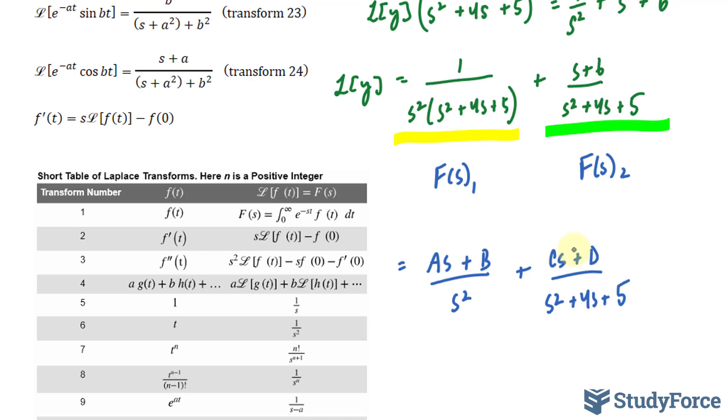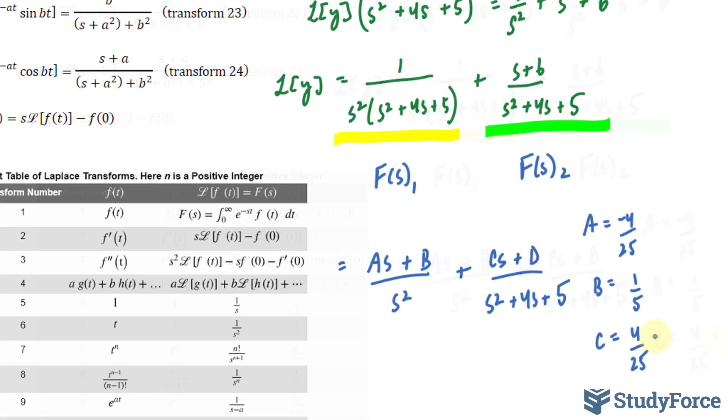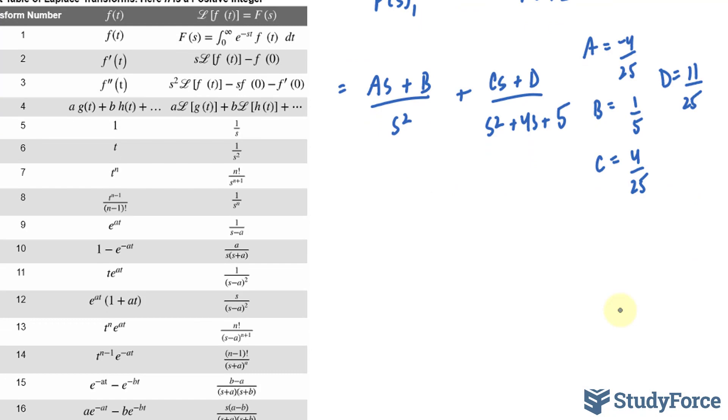If you do it correctly, and I encourage you to watch the partial fraction expansion videos that I have, you'll end up with an a value that's equal to -4/25, a b value that's equal to 1/5, c is equal to positive 4/25, and d is equal to 11/25.